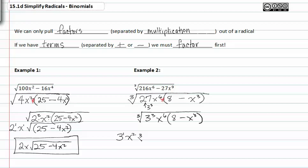So the remainder is 8 minus x³ and that's the simplification of the cubed root of 216x⁶ minus 27x⁹.